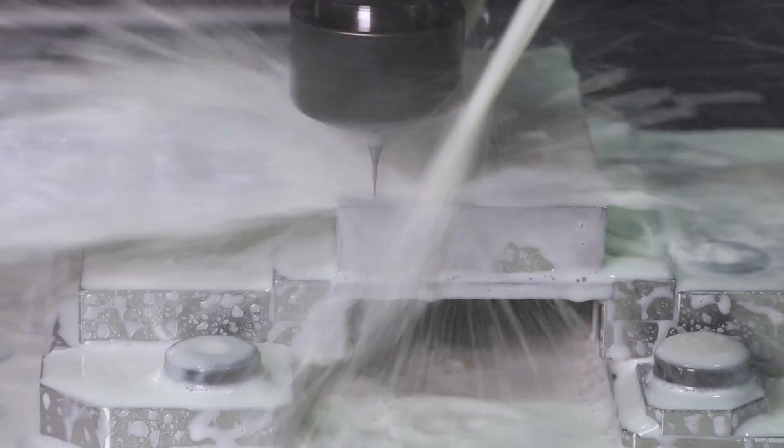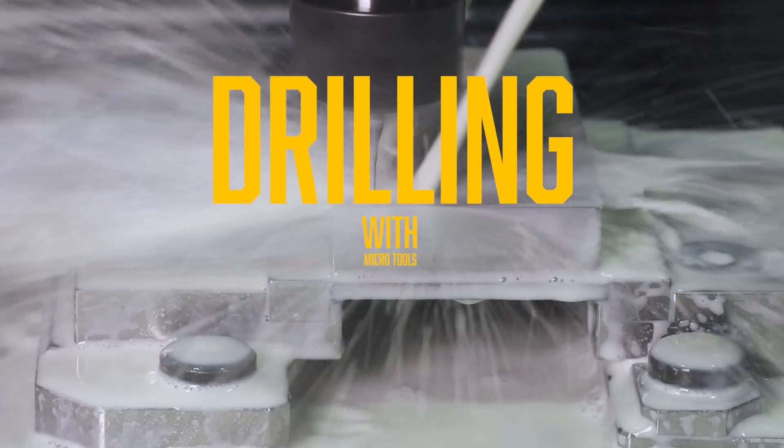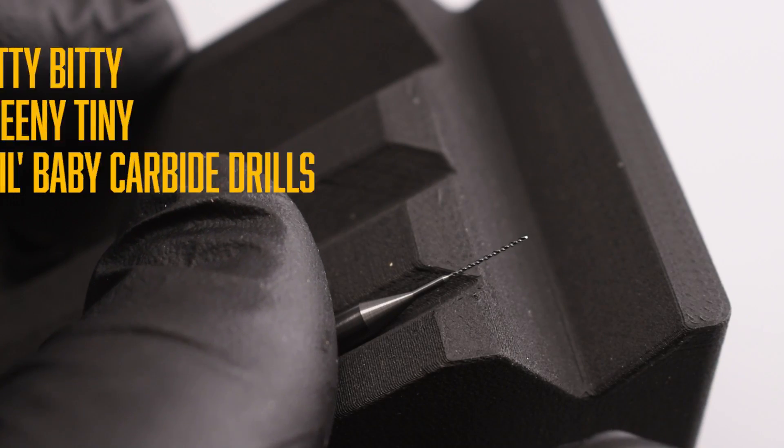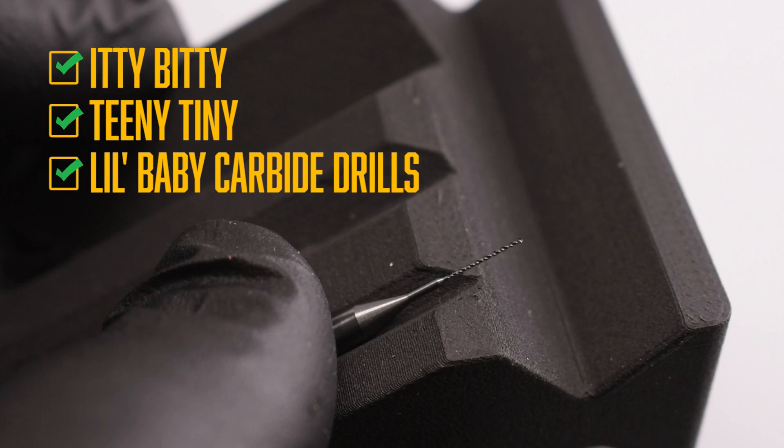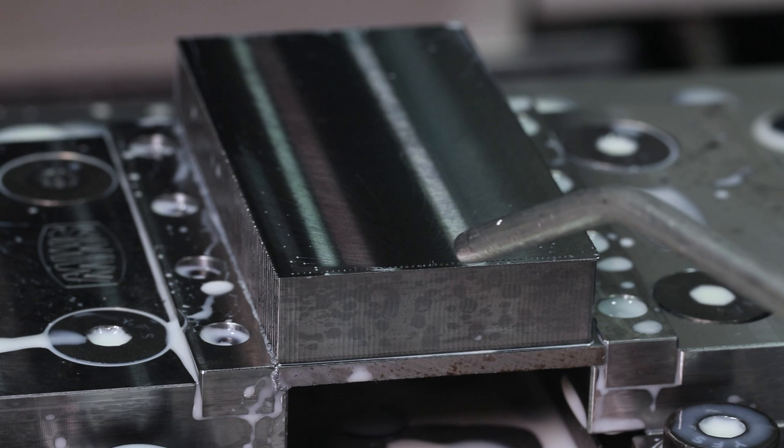Hi guys, Vince here. Today we're going to be talking about drilling and not just with any tools, micro tools. Little miniature carbide drills. The machine we'll be using is the Tormach 1100MX. I'll go over some tips and tricks and things I've learned along the way. Let's get to it.